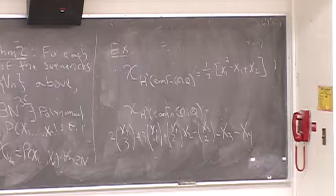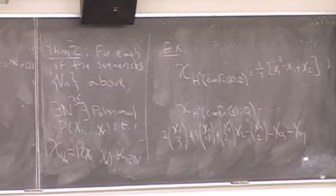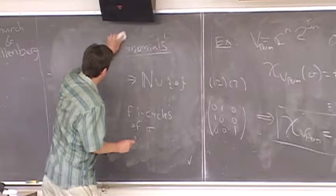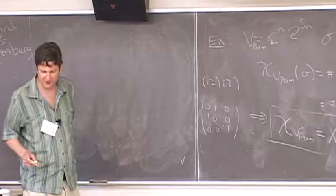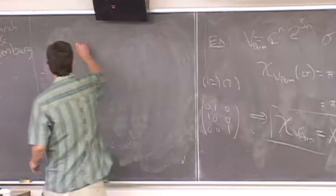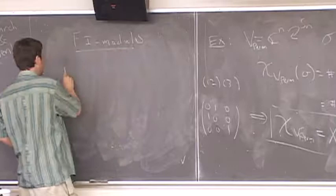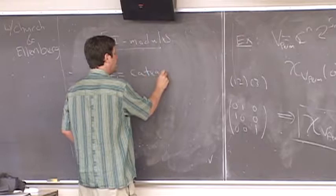In the last few minutes, let me tell you the underlying structure that gives you this polynomial behavior. I won't be able to tell you why, but I can tell you what. We call this the theory of FI-modules.